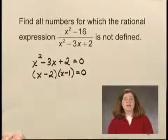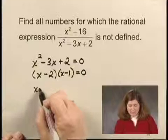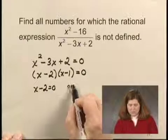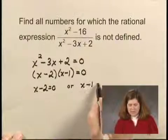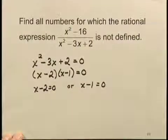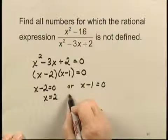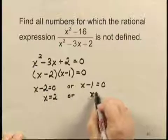And once we've factored, we set each factor equal to 0. We have x minus 2 equals 0, or x minus 1 equals 0. And we solve for x. This gives us x equals 2, or x equals 1.